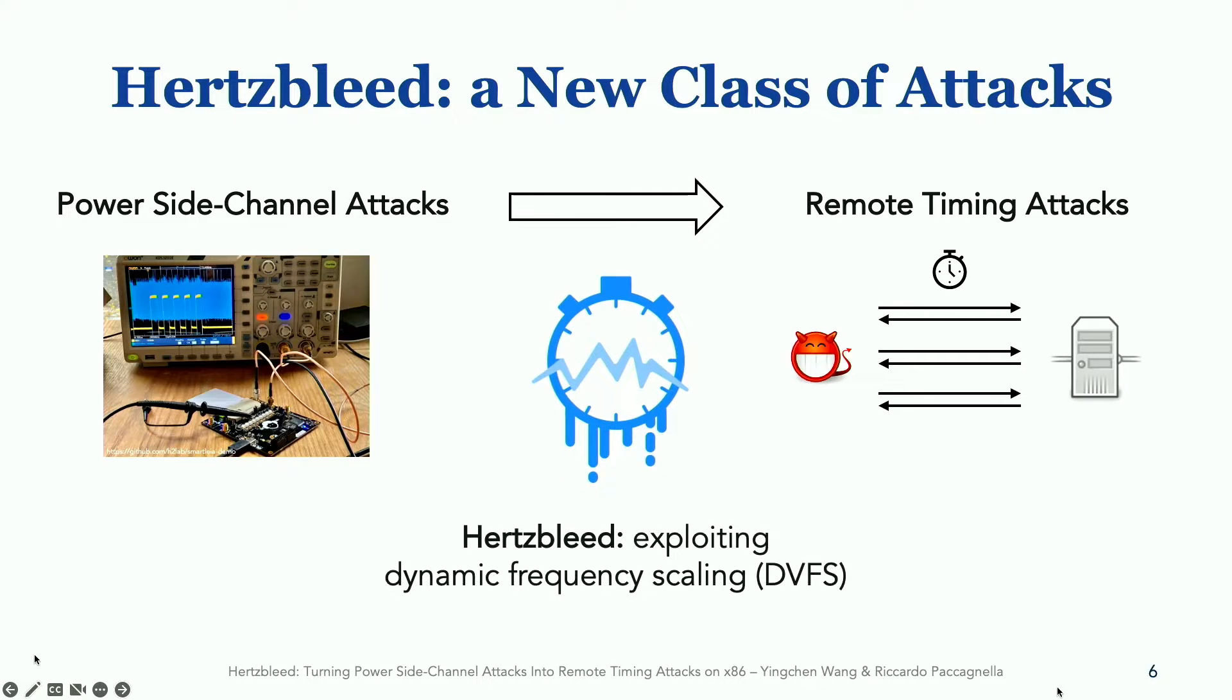The mechanism that enables Hertzbleed is frequency scaling, also known as DVFS. In this presentation, we will first tell you about how and why DVFS leaks on modern processors. We will then look at how to mount remote timing attacks using DVFS as a leakage channel. And third, we will discuss why Hertzbleed is fundamentally different from all existing timing attacks and requires to rethink the definition of constant time programming.